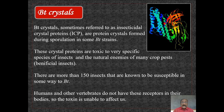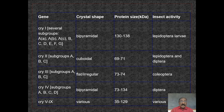Coming to the Bt crystals: Bt crystals, sometimes referred to as insecticidal crystal proteins (ICP), are protein crystals formed during sporulation in some Bt strains. These crystal proteins are toxic to very specific species of insects and the natural enemies of many crop plants — that is, beneficial insects are spared. There are more than 150 insects known to be susceptible in some way to Bt. Humans and other vertebrates do not have these receptors in their bodies, so the toxin is unable to affect human beings.